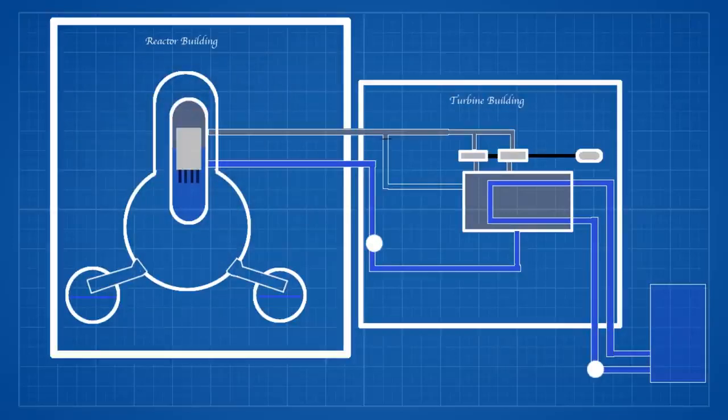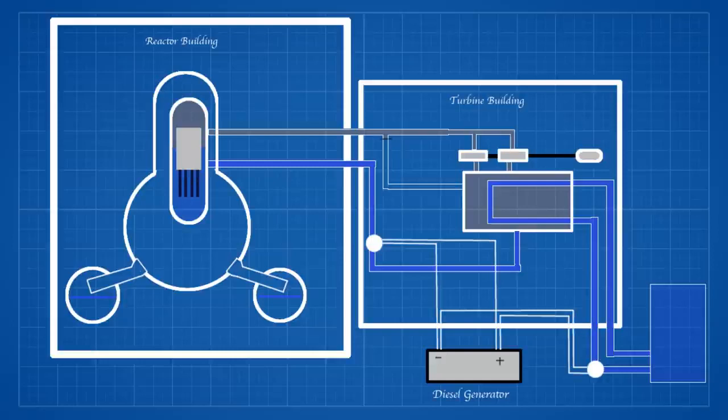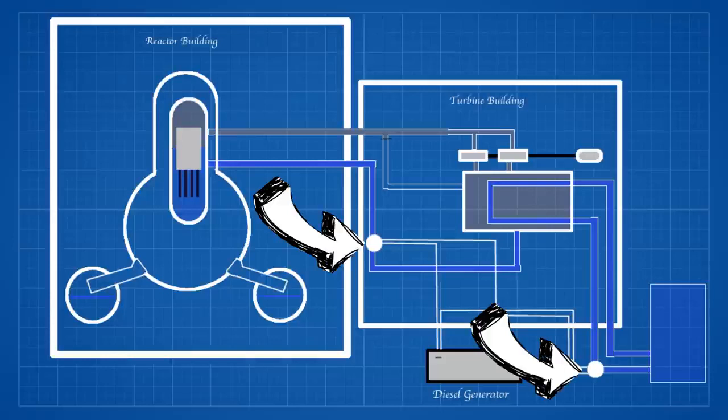In the event of a power cut, backup power is generated from diesel generators. This backup system was important for powering the coolant pumps in emergencies.